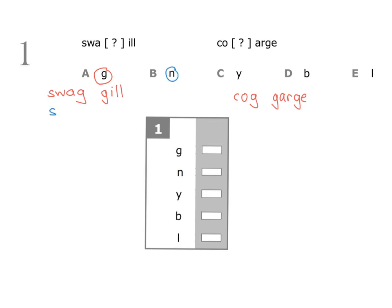S-W-A-N: this is a word — 'swan', a type of bird. Taking 'ill' and adding N at the front gives 'nil', an archaic word meaning to be unwilling, will not. On the right hand side, taking 'co' and adding N gives 'con' — be careful they might try and con you. Taking 'arge' and adding N at the front is not a word, so we move on.